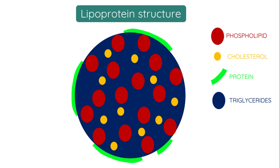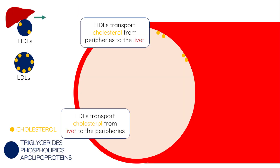Lipoproteins are categorised in relation to their densities and so you may have heard them typically referred to as either high density or low density lipoproteins. Low density lipoproteins are made in the liver and transport cholesterol to the peripheries where it is needed.